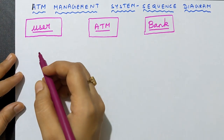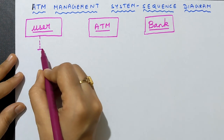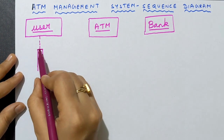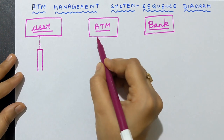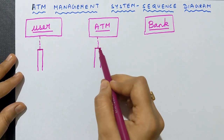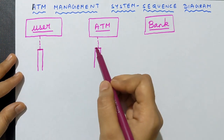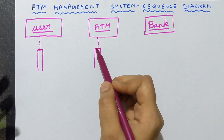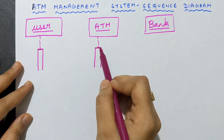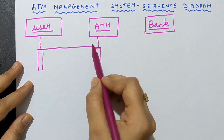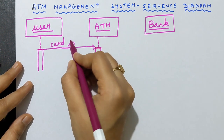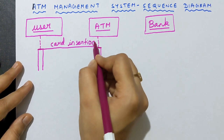Now we need to draw this in diagrammatic form. We draw dotted lines down from each object — this is the symbol for activation time. For card insertion, I draw a mark at the same height on both the user and ATM lifelines, because the user is inserting the card and the ATM is receiving it at the same time. Both are happening simultaneously, so the heights are the same. I draw an arrow from user to ATM and write 'card insertion' above it.